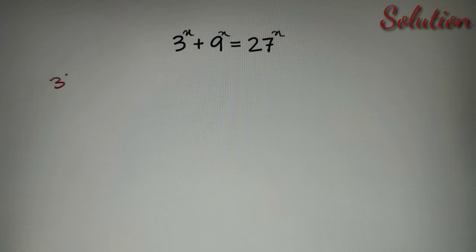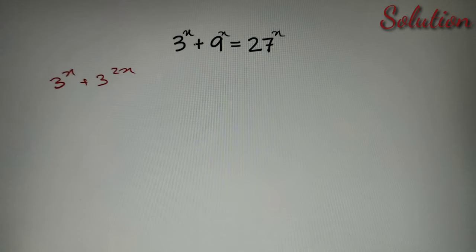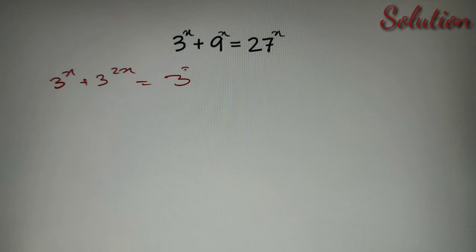Now we can rewrite it as: 3 raised to the power x plus 9 raised to the power x, which can be written as 3 raised to the power 2x, because 9 raised to the power x is simply 3 raised to the power 2, whole raised to the power x, which equals 3 raised to the power 2x. Similarly, 27 raised to the power x can be written as 3 raised to the power 3x.